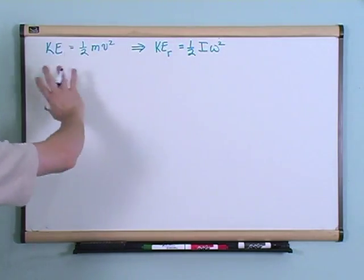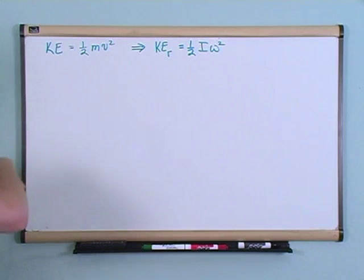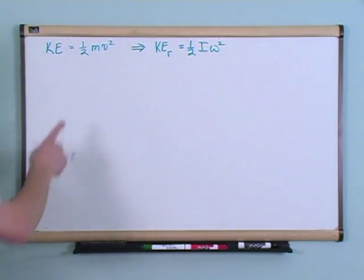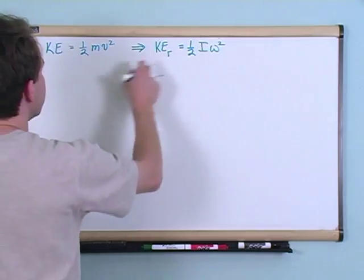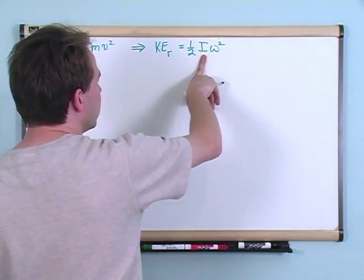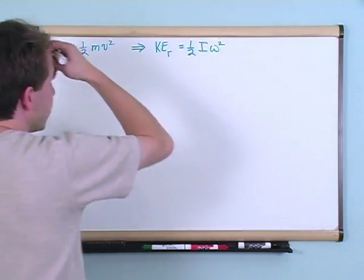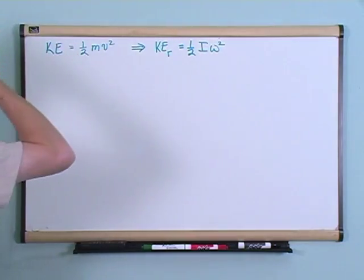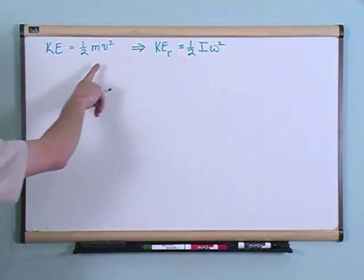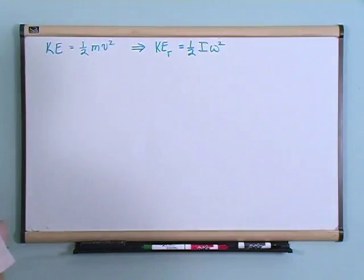I'm writing it here so you can see the direct analogy. These equations really aren't that different: you've got the one-half, here you have mass, here you have the moment of inertia — which is a measure of the mass distribution of an object — and here, instead of velocity squared, you have angular velocity squared.